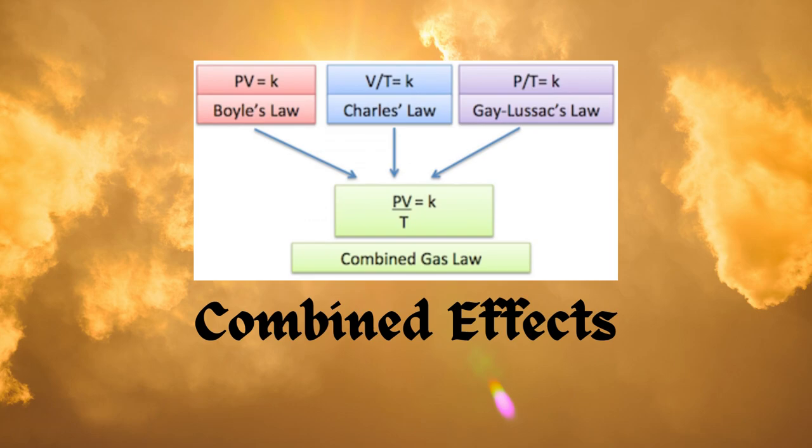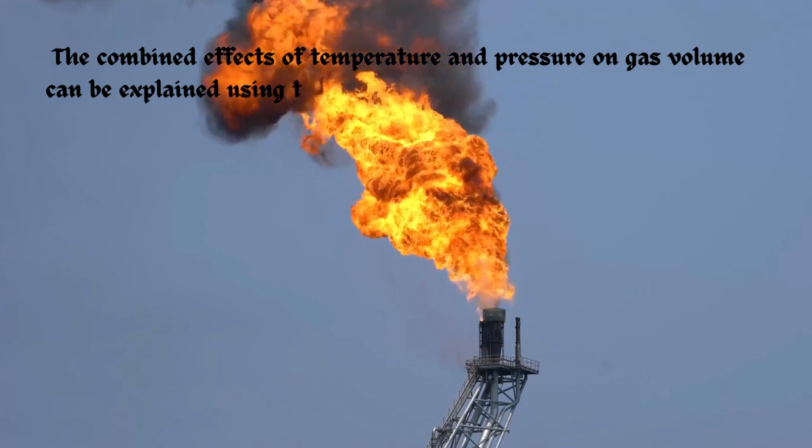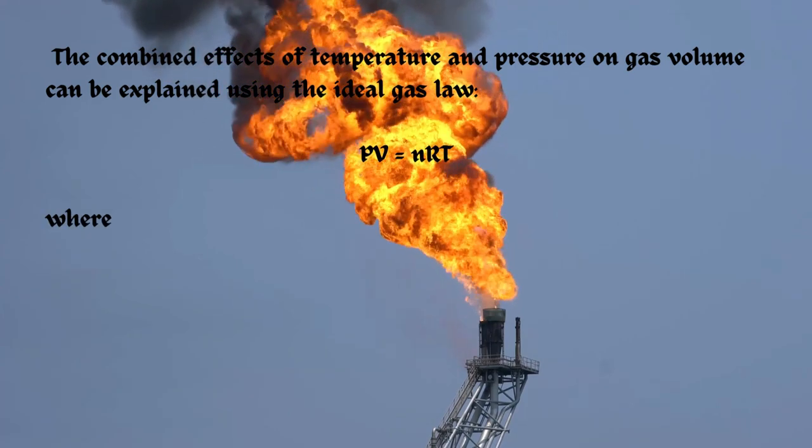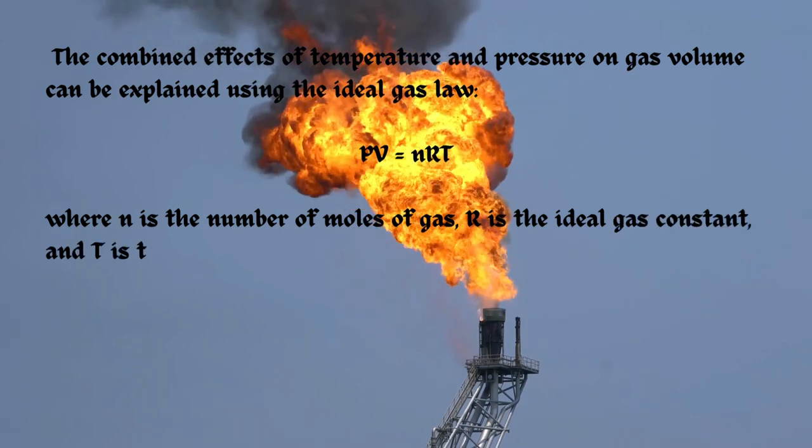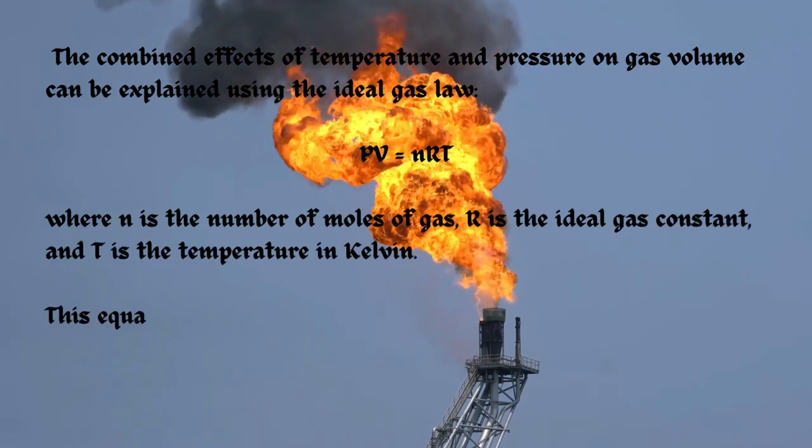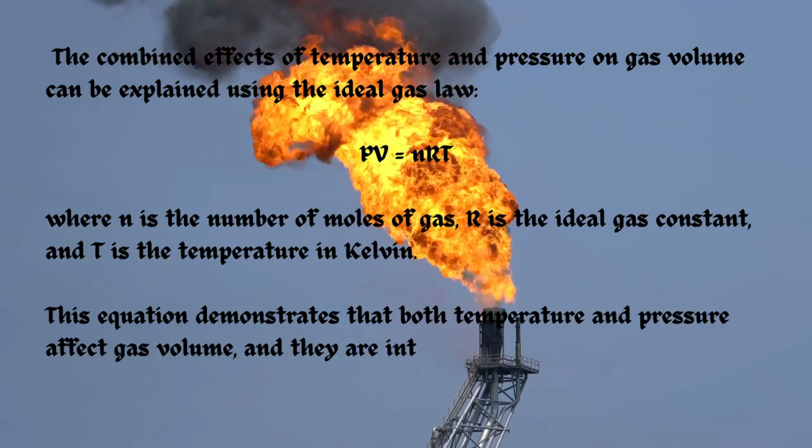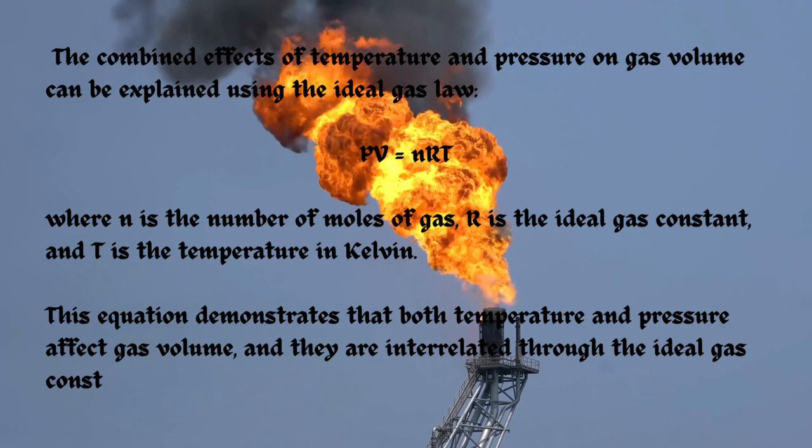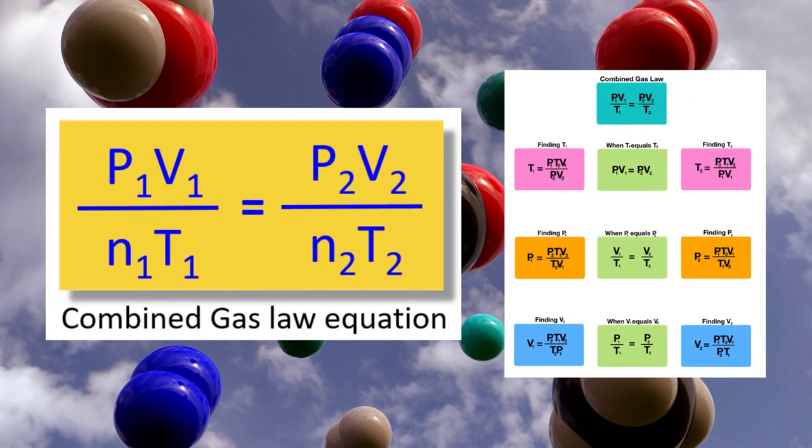Combined effects. The combined effects of temperature and pressure on gas volume can be explained using the ideal gas law PV equals NRT, where N is the number of moles of gas, R is the ideal gas constant, and T is the temperature in Kelvin. This equation demonstrates that both temperature and pressure affect gas volume, and they are interrelated through the ideal gas constant. Therefore combined gas law equation is P1 into V1 divided by N1 into T1 equals P2 into V2 divided by N2 into T2.